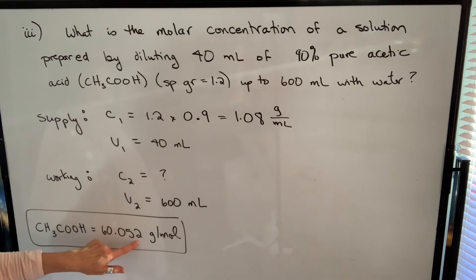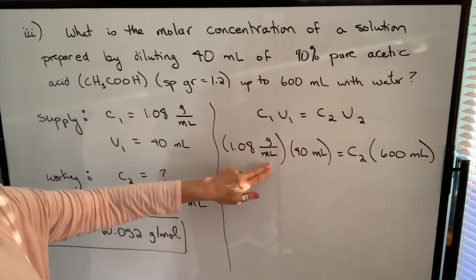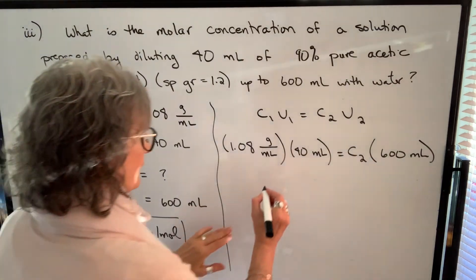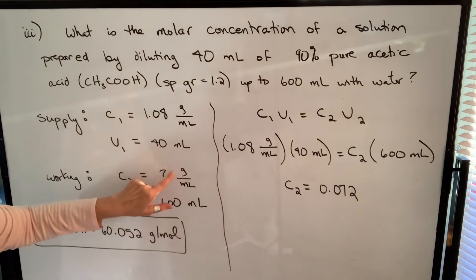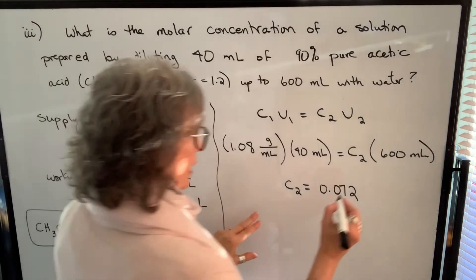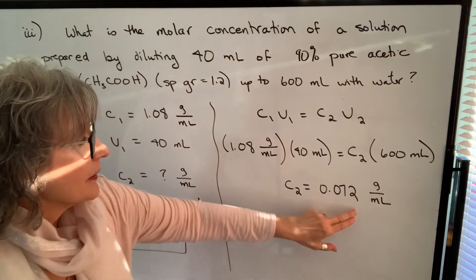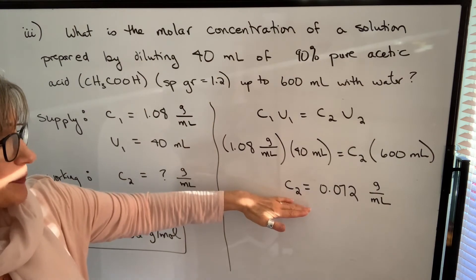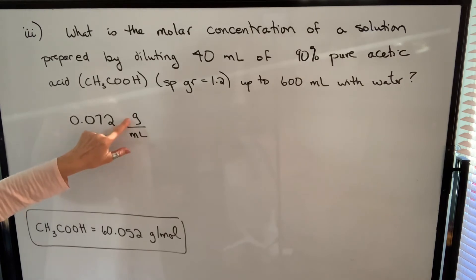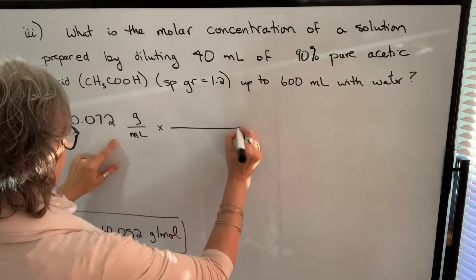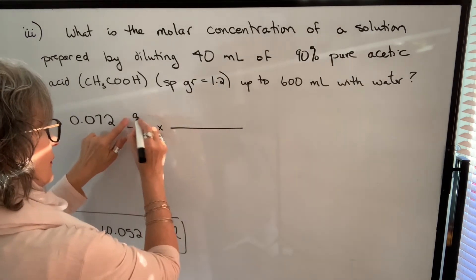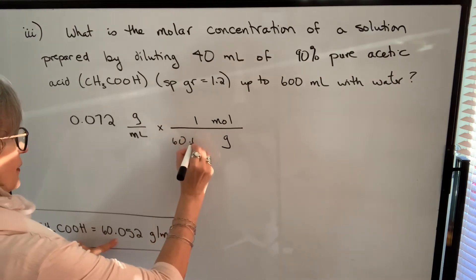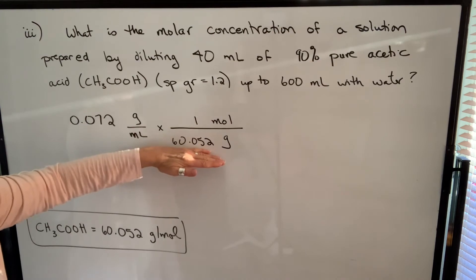We'll find the concentration in grams per milliliter first, then convert to moles per liter using molar mass. Plugging into C1V1 = C2V2: to solve for C2, multiply 1.08 by 40 and divide by 600, getting 0.072 grams per milliliter. Now converting to molar concentration: using dimensional analysis, cancel grams using the molar mass of acetic acid — 60.052 grams per mole — putting grams in the denominator and moles in the numerator.